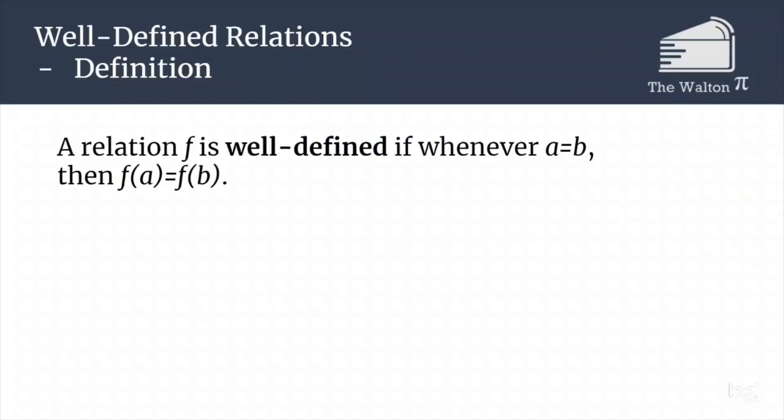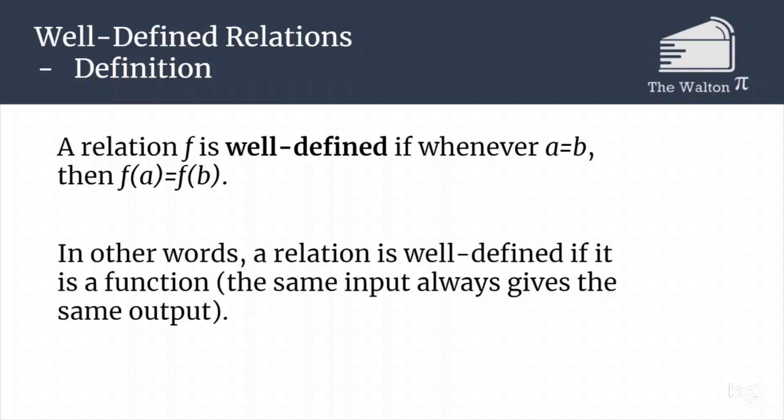A relation is well-defined if any time we have the same input, the outputs must match as well, meaning that we don't have any pairs where the first coordinate matches in two different pairs but the second coordinate does not. A function is what a well-defined relation is if every single possible input in our domain has an element that it maps to.